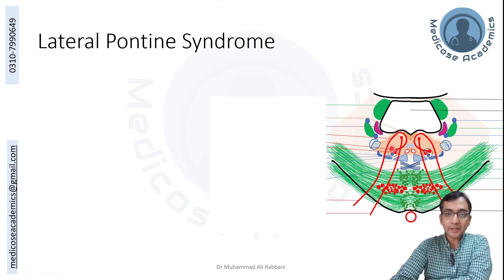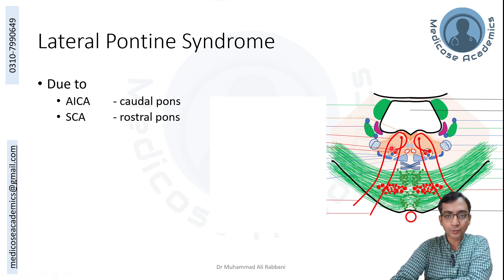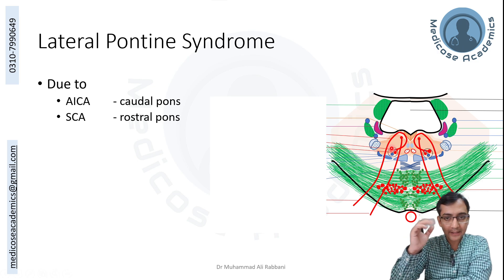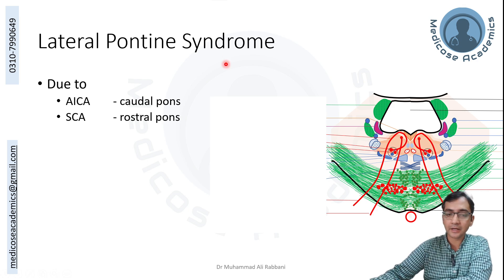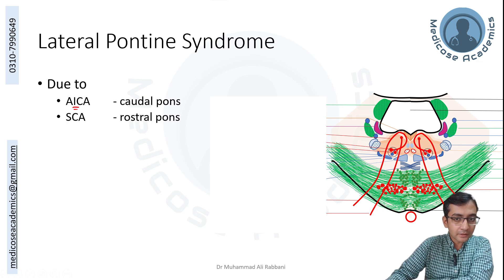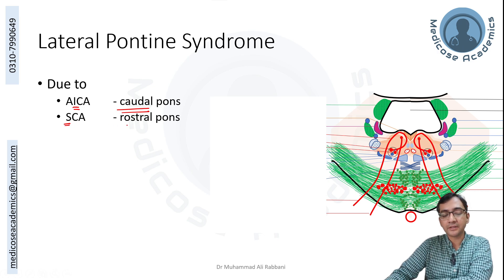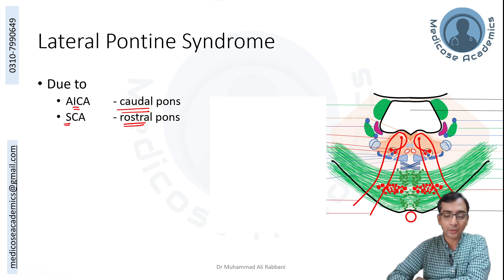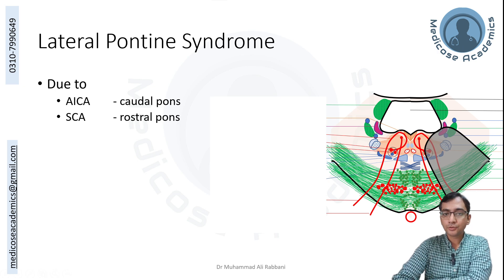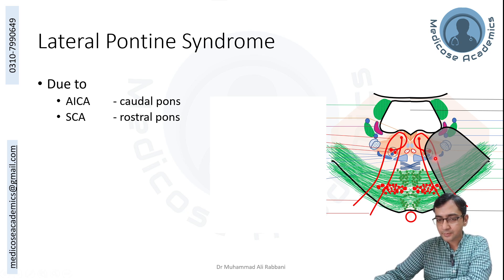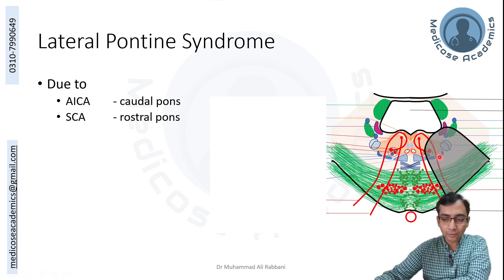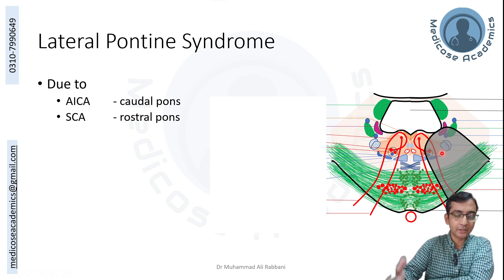Next is lateral pontine syndrome. The arteries usually involved are the anterior inferior cerebellar artery (AICA) or the superior cerebellar artery (SCA). The inferior one affects the caudal aspect of the pons, while occlusion of the superior cerebellar artery affects the rostral pons. The lateral aspect is affected. Structures involved include the facial nerve, spinal lemniscus, spinal nucleus of the trigeminal, vestibular and cochlear nuclei, inferior cerebellar peduncle, and just above — the trigeminal nuclei.